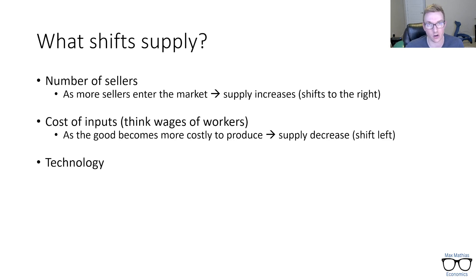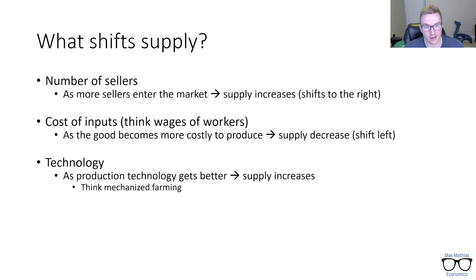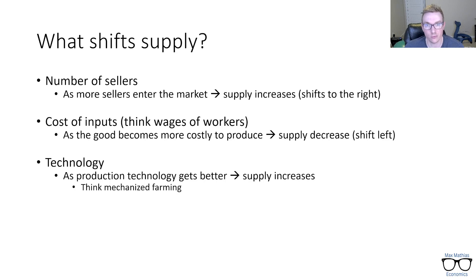And lastly, technology — our catch-all generic category. As production technology gets better, we assume supply increases. If production technology got worse, supply would decrease. A great example is mechanized farming. Back in ancient and medieval times, people worked on a farm with a plow and animals, and their output wasn't that great. Today, automated mechanized equipment means a very small number of people can create a vast amount of food. That is a huge improvement in production technology, and supply has increased enormously because of it.